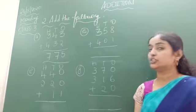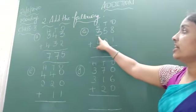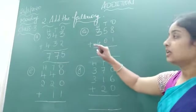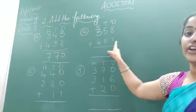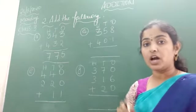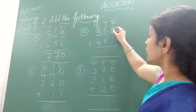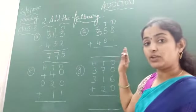Now look at the next one. What is given here? 358 plus 401. We need to add from the ones place. 8 plus 1, first add the ones place.